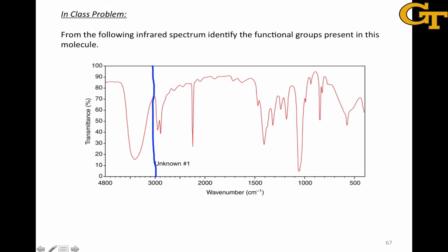Some of these regions we've talked about are above 3000, where we find the OH, the NH, and the SP2 and SP hybridized carbon-hydrogen stretches. Then we have between 2500 and 2000, which is where we find most of our carbon-carbon, carbon-nitrogen triple bond stretches.